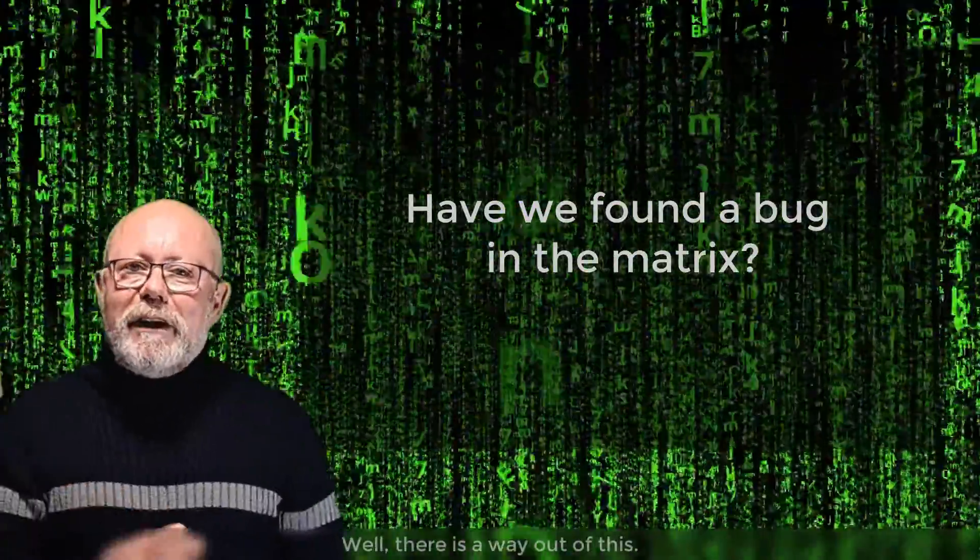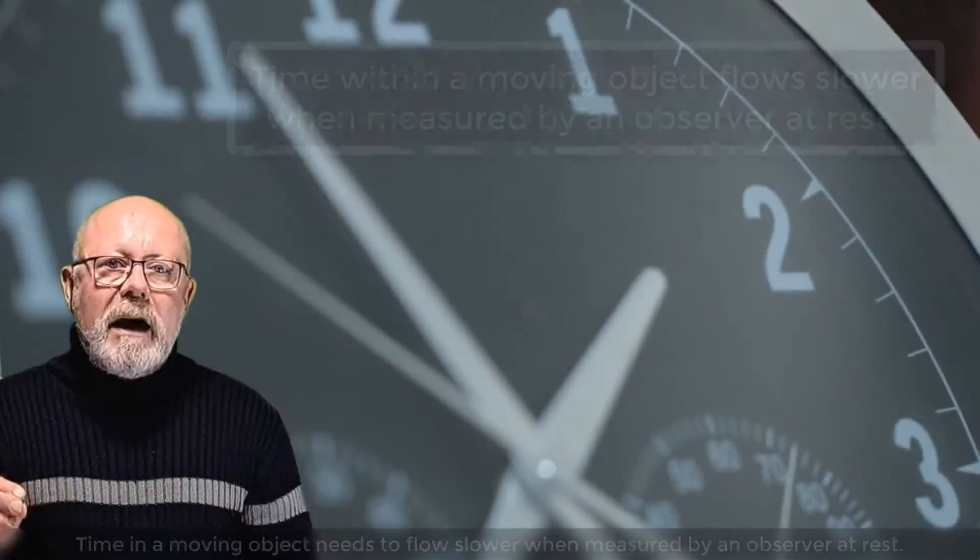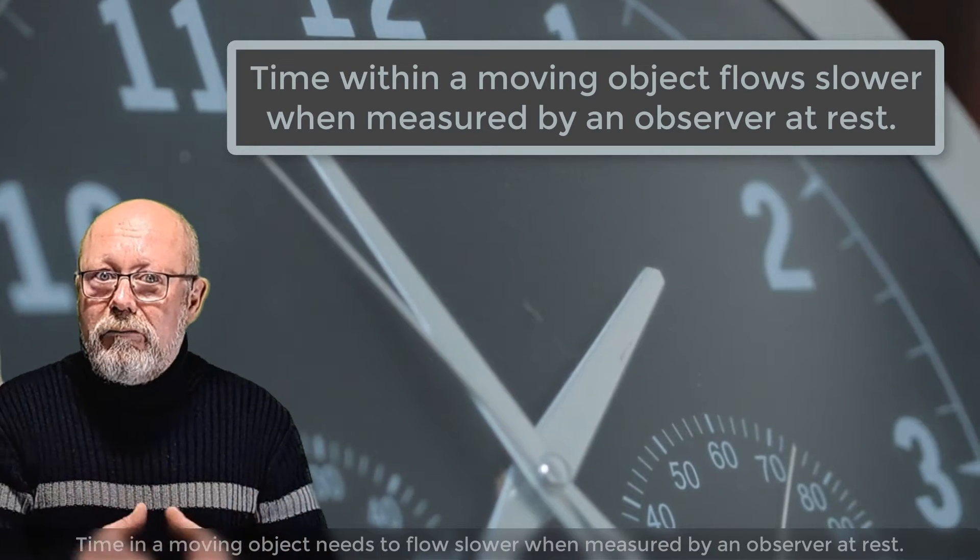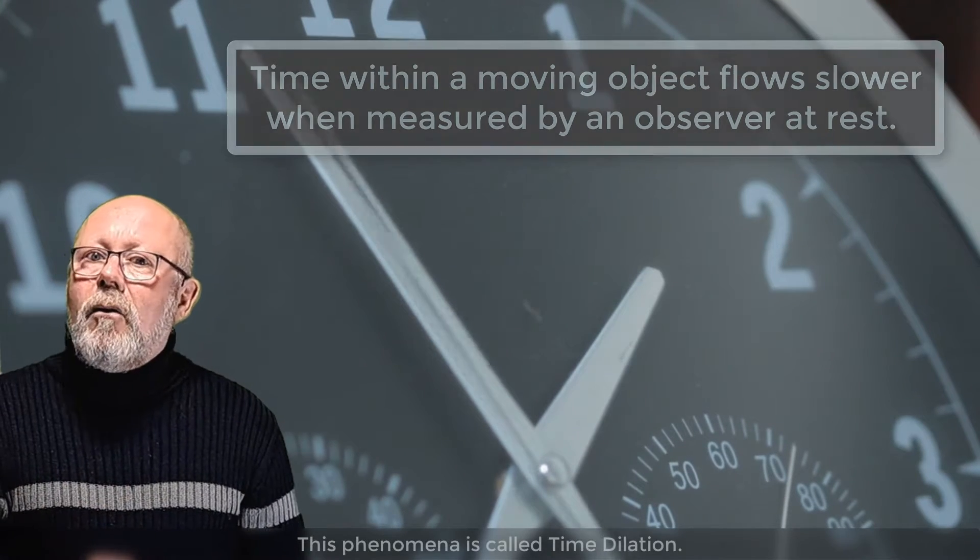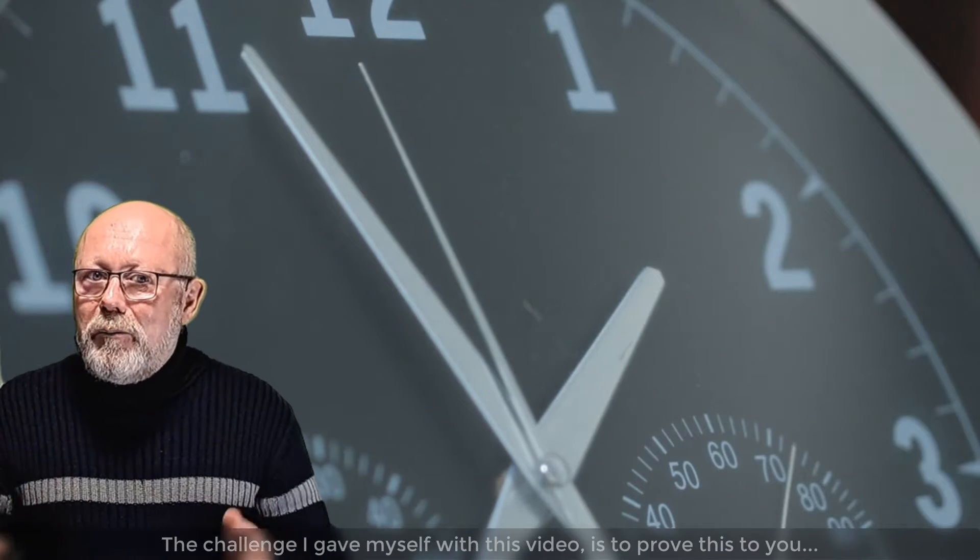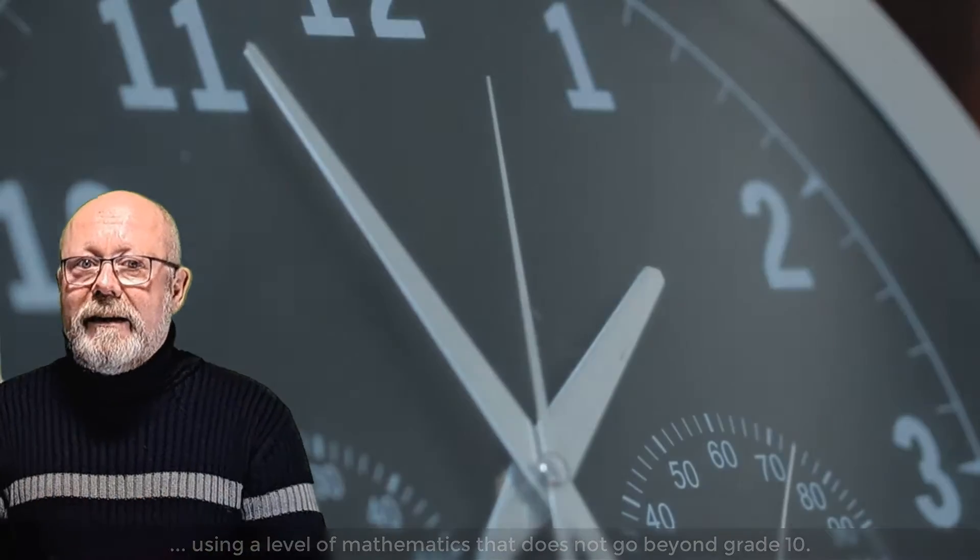Well, there is a way out of this. We need to become a little flexible with how we see time. Time in a moving object needs to flow slower when measured by an observer at rest. This phenomenon is called time dilation. The challenge I gave myself with this video is to prove this to you using a level of mathematics that does not go beyond grade 10.